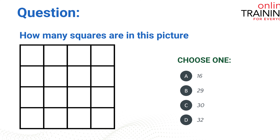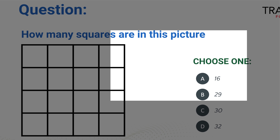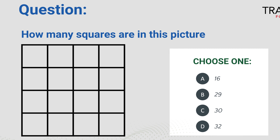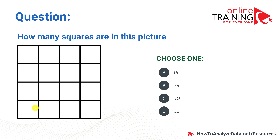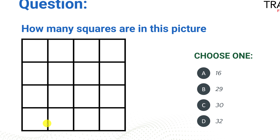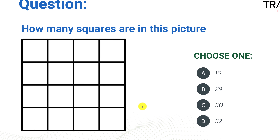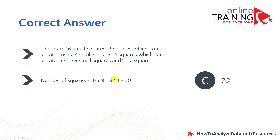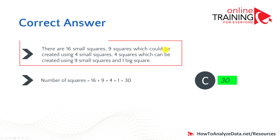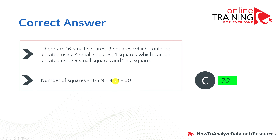Let's look at the question that confuses many people. How many squares are in this picture? Choices: 16, 29, 30, or 32. The confusion comes from the fact that squares are not only the small ones. If you count only small squares, the answer would be 16. But you can also form larger squares: 9 squares using 4 small squares each, 4 squares using 9 small squares each, and 1 big square. So the total is 16 plus 9 plus 4 plus 1, which equals 30. The correct answer is 30.